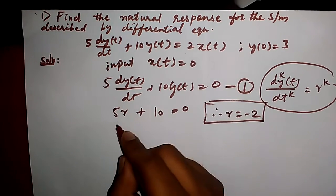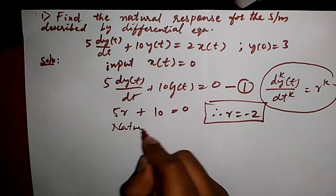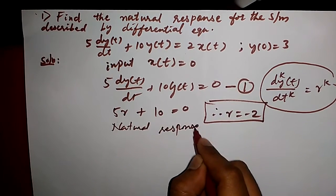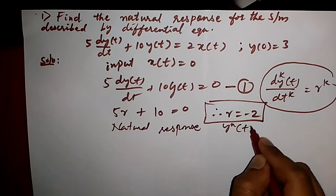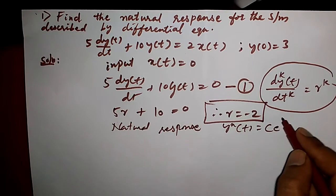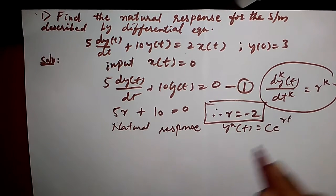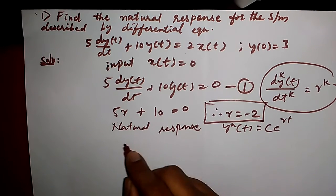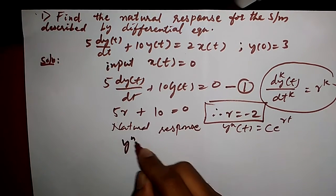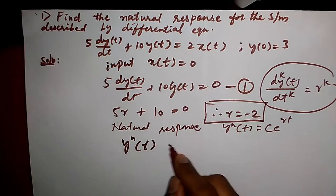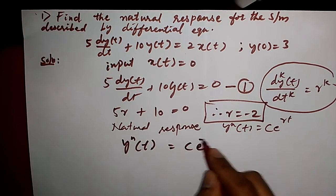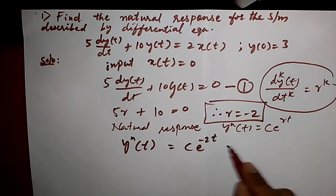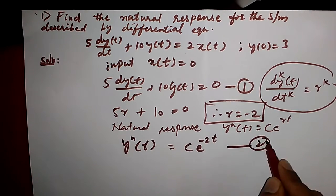So the natural response — now we can write it. We know the standard formula for the natural response is given by y_n(t) is equal to C times e raised to rt. We know the value of r, so substituting the r value: the natural response is y_n(t) is equal to C times e raised to minus 2t, since r is equal to minus 2. This is the second equation.